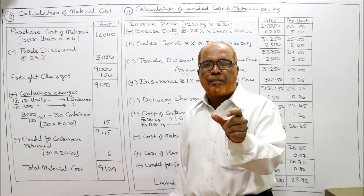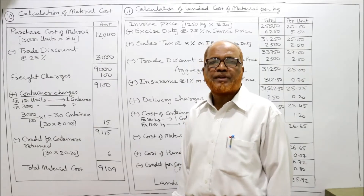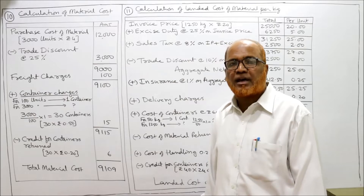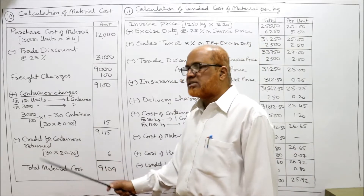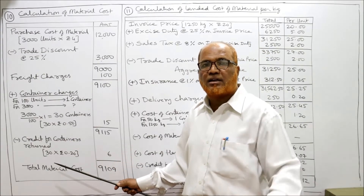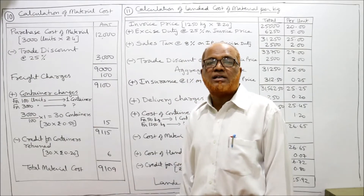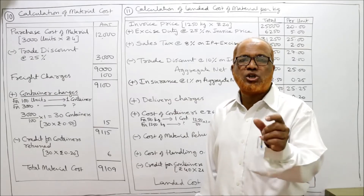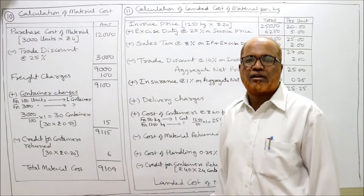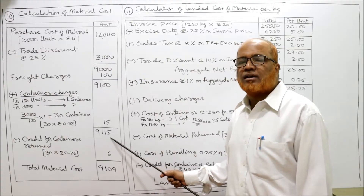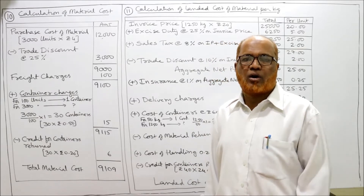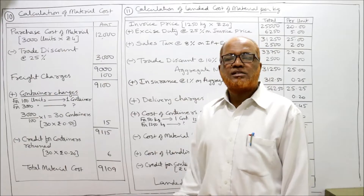Within a specific period we return the containers to the supplier and get a credit. Credit for containers returned: we took 30 containers and we return 30 containers. Each container gives 20 paisa credit, so 30 × 0.20 = 6 rupees. Subtract 6 rupees from 9,115 to get 9,109 rupees. This is the total material cost for 3000 units. That is the end of Problem Number 10.